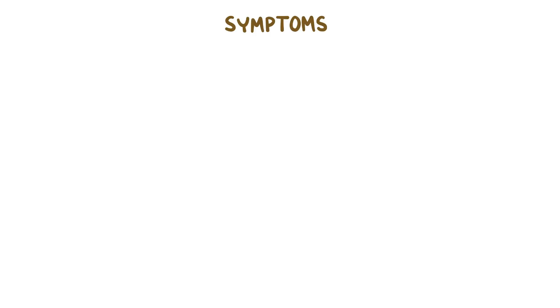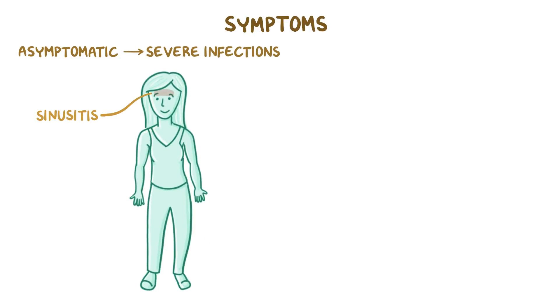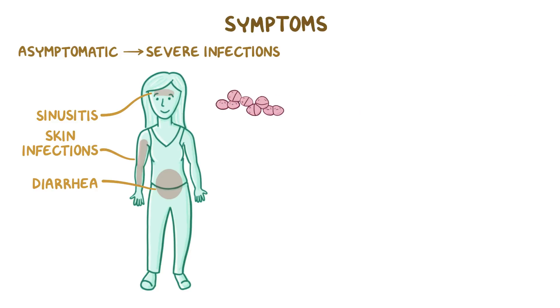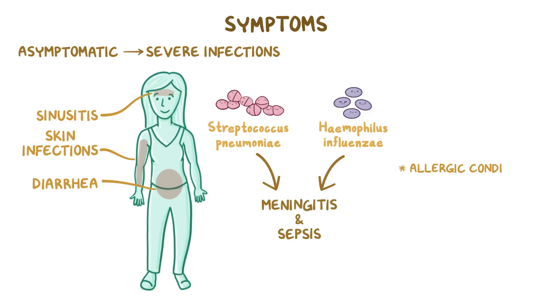The range of symptoms starts in infancy and can vary widely. Some individuals seem to be completely asymptomatic, while others develop recurrent severe infections like sinusitis, diarrhea, and skin infections, in particular from encapsulated bacteria like Streptococcus pneumoniae and Haemophilus influenzae type B. These infections might progress to more severe conditions like meningitis and sepsis. Often, these individuals also suffer from allergic conditions like atopic dermatitis and asthma.